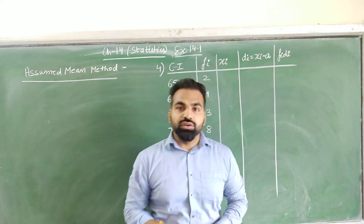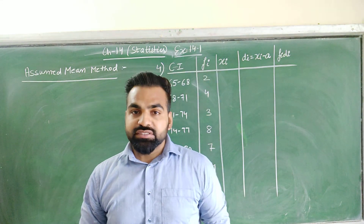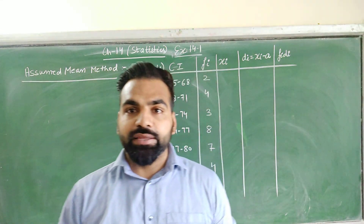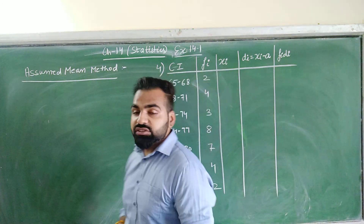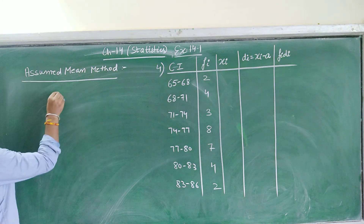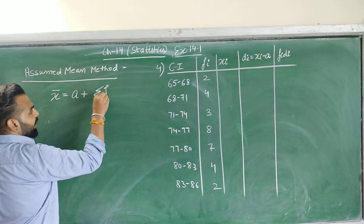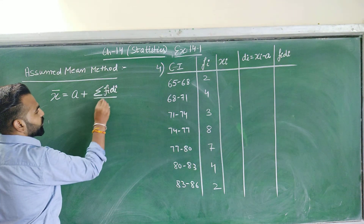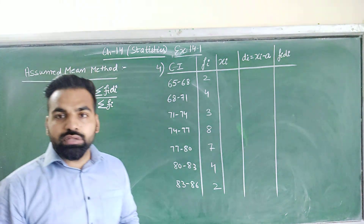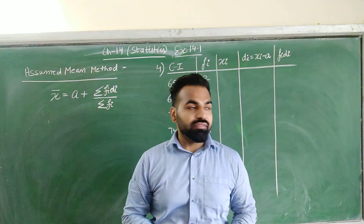Hello everyone. In the previous video we discussed about the direct method to find the mean of a continuous data. In this video we will discuss about the second method to calculate the mean, that is the assumed mean method. First of all, write the formula for assumed mean method: x̄ = a + Σfᵢdᵢ / Σfᵢ.